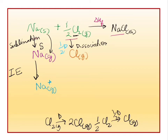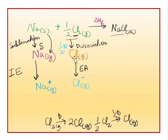Next step — hum kya karenge? Is chlorine ko chloride ion mein convert karenge. Chloride ion mein jo conversion hai — yeh kiya hai? Yeh jo conversion hai, isko hum kehte hai electron ka addition. Toh yahaan par kuch energy release hogi — us energy ko hum kya kehenge? Electron affinity. Kyun ki electron ka addition ho raha hai ee chlorine gaseous atom mein, jo anion mein convert ho raha hai. Toh yahaan par jo energy release hogi, woh hogi electron affinity.